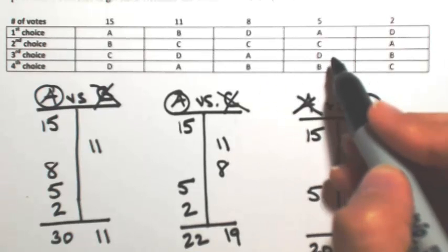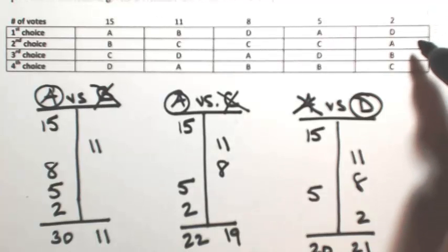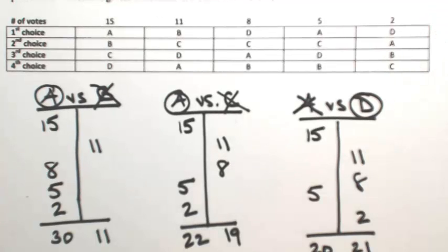In the next one there, D is over B, so D gets 5. In the last one there, D is over B, so D gets 2.